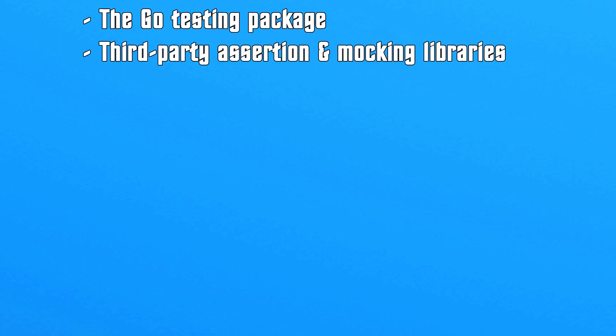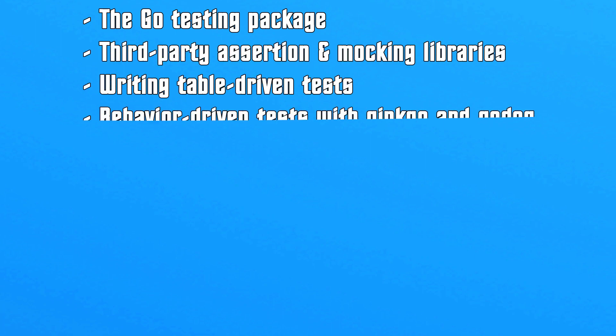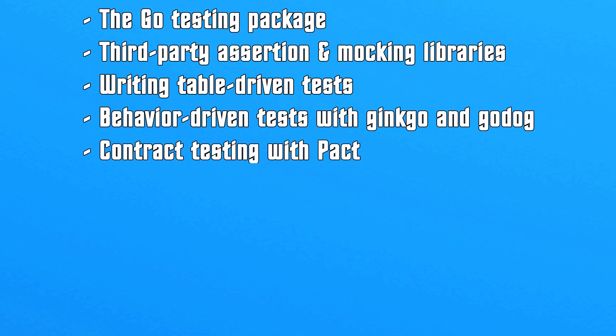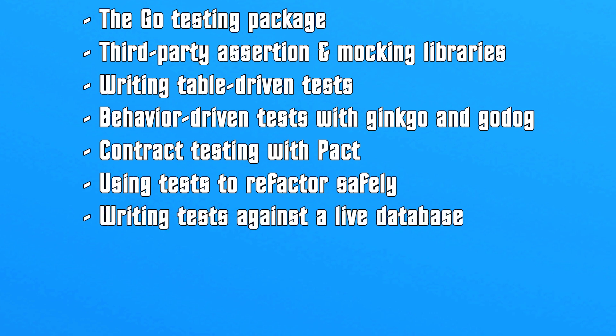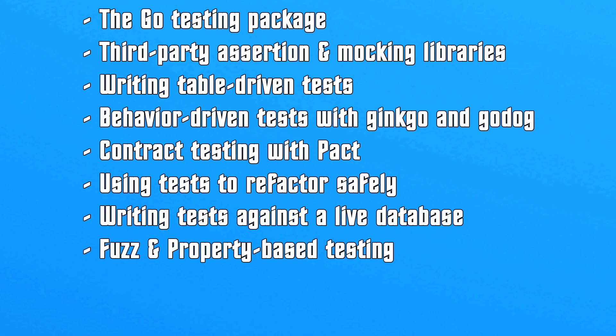Here's a quick summary of some of the topics covered in this book. If any of these are new to you, you will get your money's worth by reading it: the testing package in Go; third-party assertion and mocking libraries; writing table-driven tests; behavior-driven development with either Ginkgo or GoDog; contract testing with PACT — a topic I was completely unfamiliar with and will begin using after reading the book; using tests to refactor safely; writing tests against a live database; fuzz and property-based testing; testing concurrent code; and testing with generics.